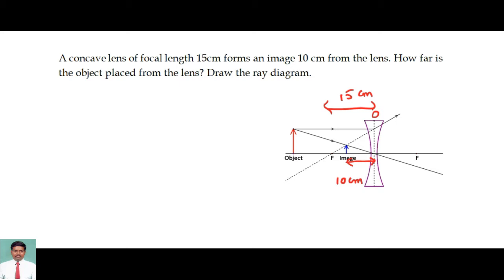Now I am going to apply the Cartesian sign convention. According to the Cartesian sign convention, all distances should be measured from the optic center. Any distance measured from the optic center to the left side will be taken as minus, to the right side will be taken as plus.